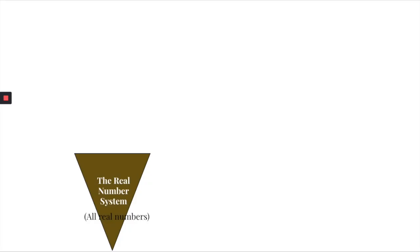We're going to take a look at the real number system. The real number system is all numbers that can be found on a number line, so the numbers can be really large or they can be really small.